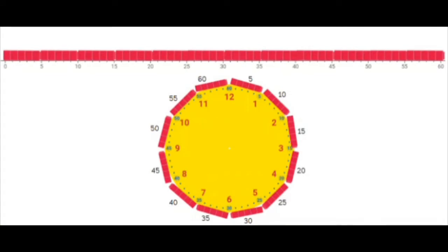In this lesson, students will read and write time in 5-minute increments. Make a model of an analog clock using a number line with linking cubes representing increments of 5. Then make a model of an analog clock with linking cubes representing increments of 5 minutes. Ask students: how are the number line and analog clock alike? Student responses may include: both have 60 tick marks, and you can skip count by 5s on both.